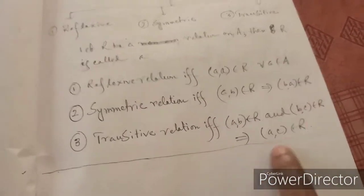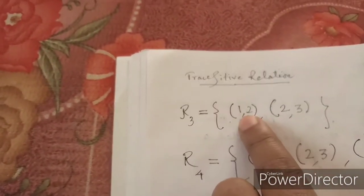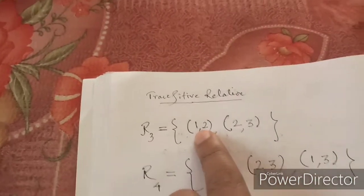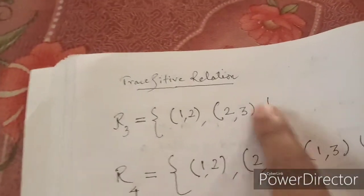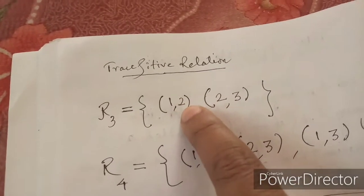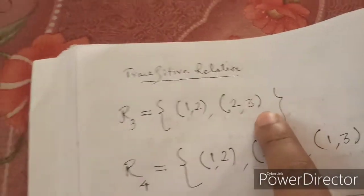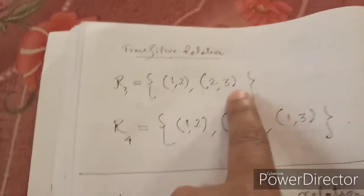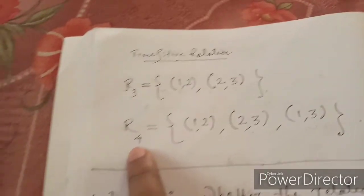Looking at R3: (1,2) belongs to R3 and (2,3) belongs to R3, and the two 2s are common, so (1,3) should belong to R3. But (1,3) is not in R3, so R3 is not a transitive relation.